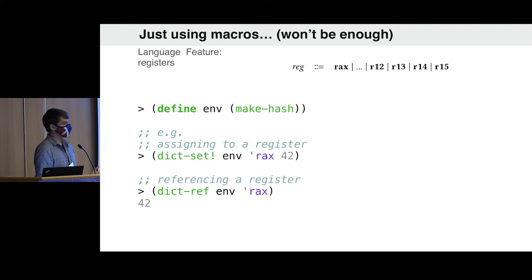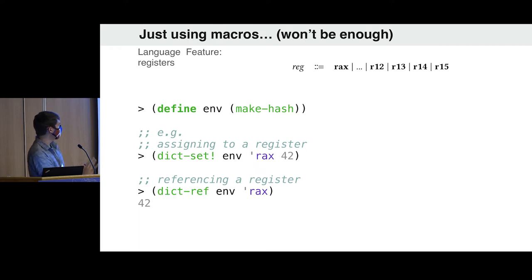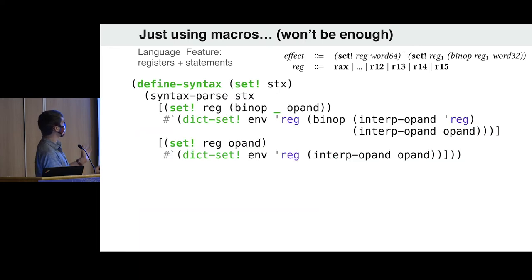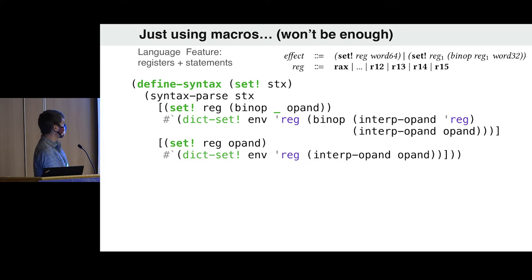I can write the same interpreter using macros like this. I want to implement my registers — what I could do is define a mutable hash to give me a model of my registers. I would model setting the registers by a mutable dictionary update: I set RAX just by setting the environment with the key RAX and some value. And I model referencing the register by a dictionary reference.